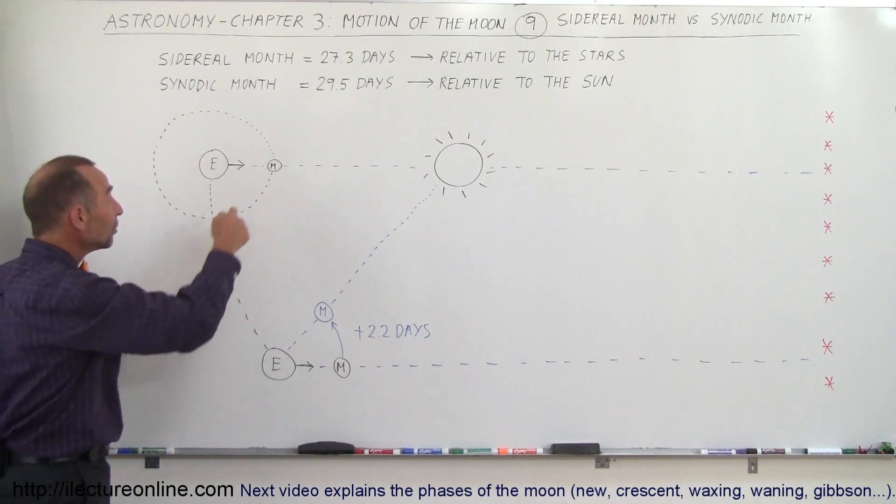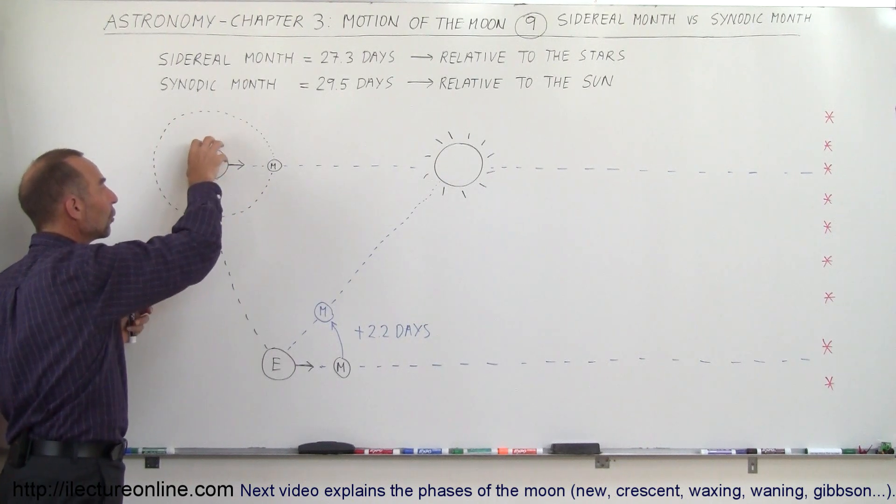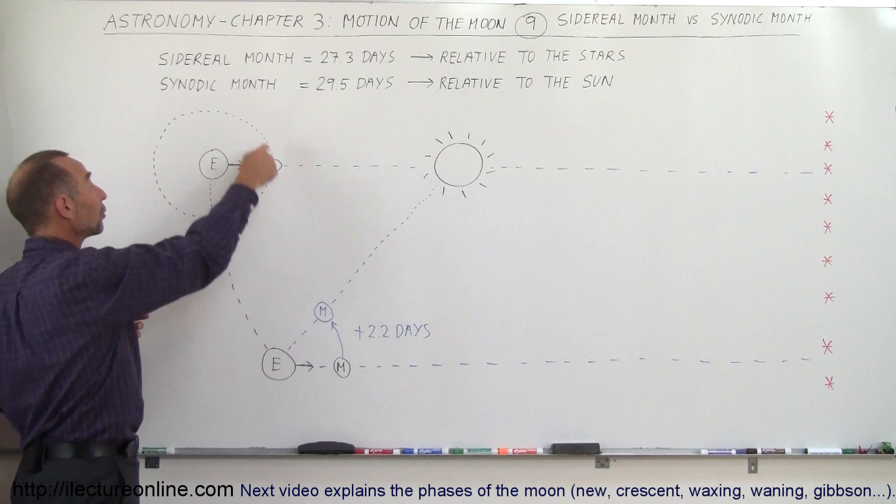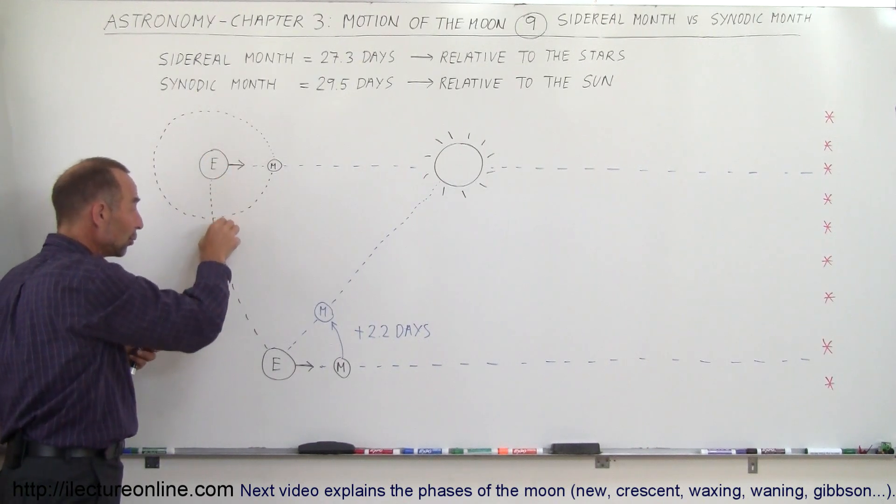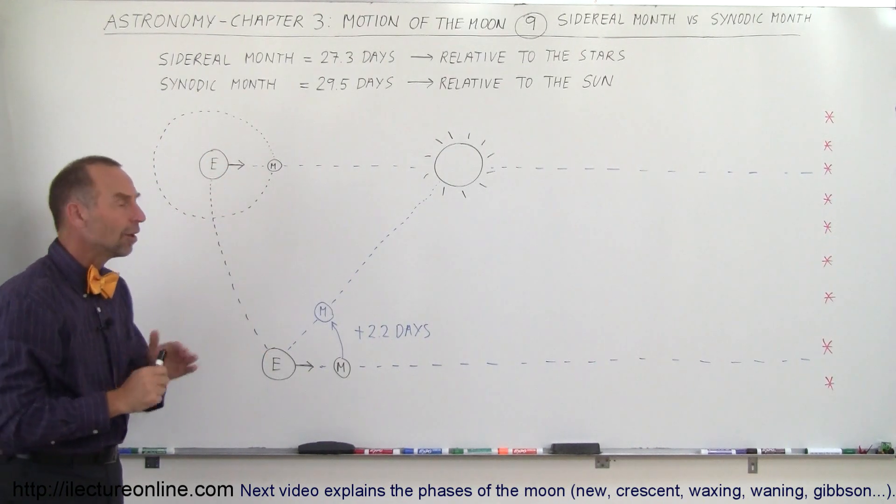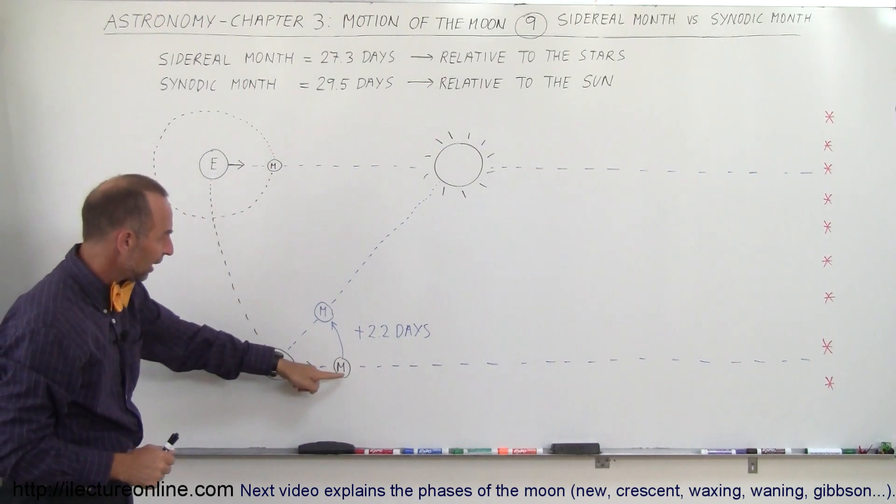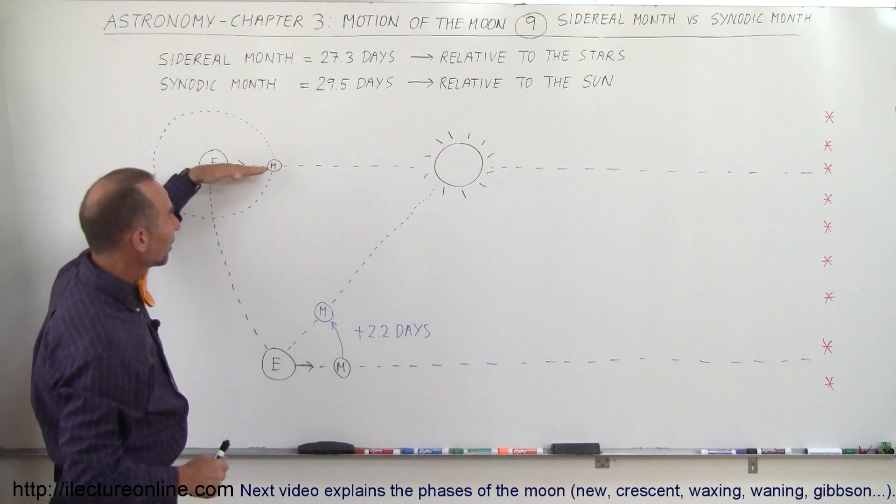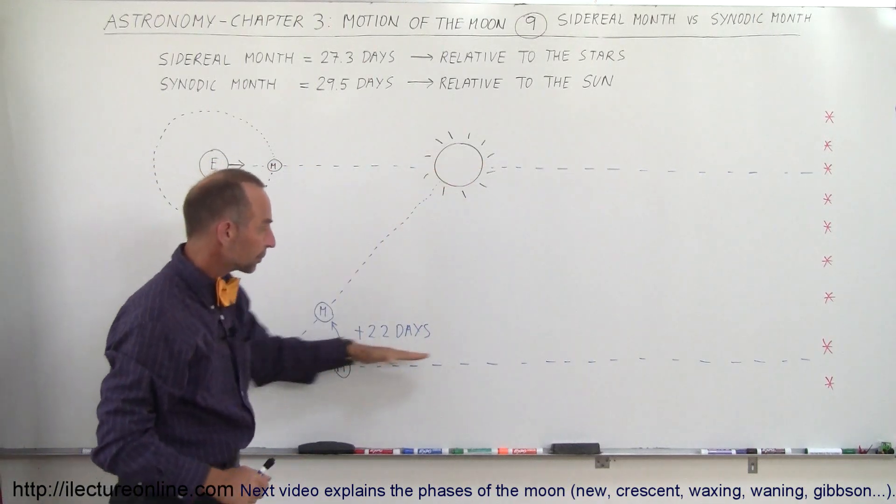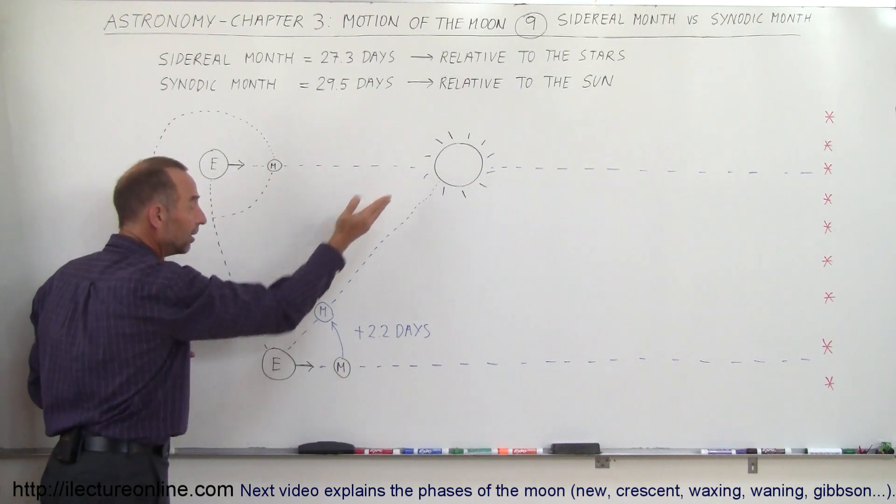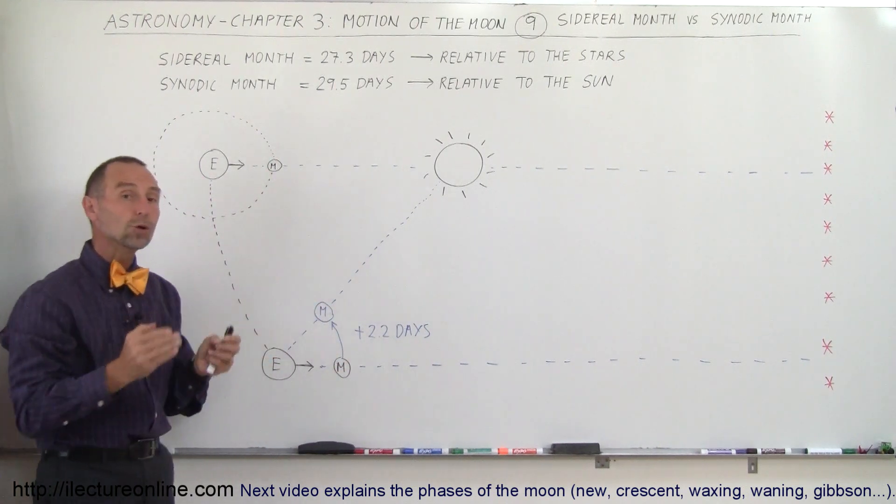Well, the reason is because while the moon is taking its trip around the earth, the earth is taking its trip around the sun. And in the time that it takes for the moon to go around the earth once, the earth will have moved to an angle of almost 30 degrees from where it was before. So when the moon gets back to the same position, like right here, relative to the stars, and that's why these two lines are parallel here, you can see that the moon is not yet between the earth and the sun, so that it cannot yet be a new moon.